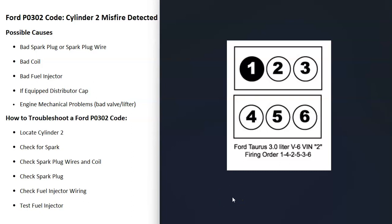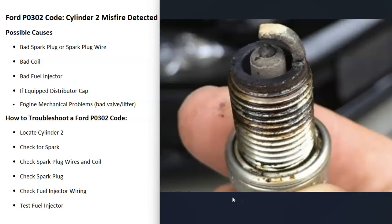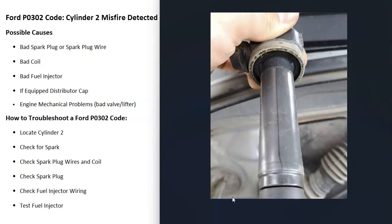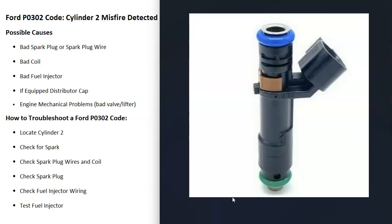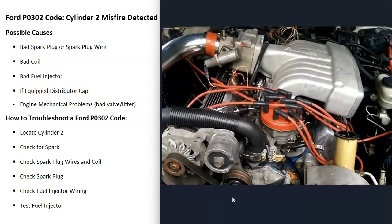What are some possible causes? It could be a bad spark plug or a bad spark plug wire. It could be a bad coil or a bad injector. If you have an older Ford with a distributor, it might be a bad distributor cap. It's also possible it's a mechanical problem like a bad valve or bad lifter, but that's fairly rare. Usually a misfire code comes down to a bad spark or something gone wrong with the fuel going into the cylinder.